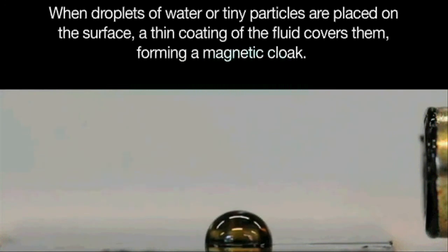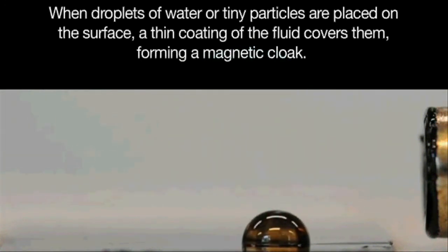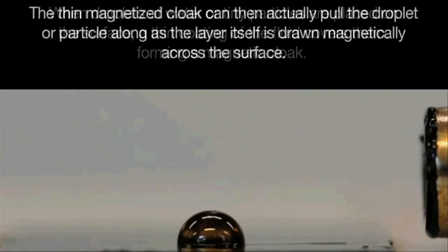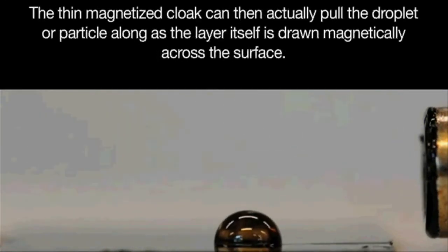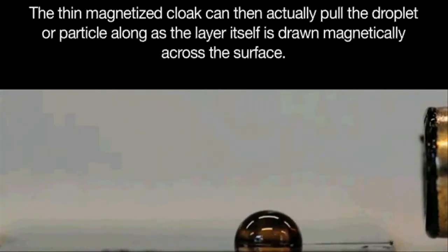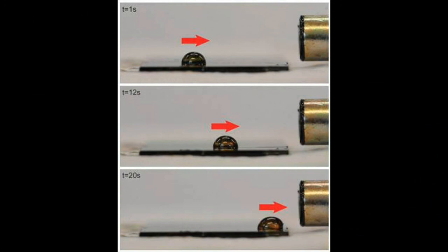When droplets of water or tiny particles are placed on the surface, a thin coating of the fluid covers them, forming a magnetic cloak. When exposed to a magnetic field, the droplet is pulled toward the magnet by its thin cloak of ferrofluid, even though the droplet itself is not magnetic.